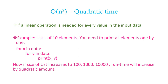Next is quadratic time — Big O of N squared. Let's consider an example: you have a list of N elements and you want to print all possible pairs of two elements. You write: for x in data, for y in data, print x, y. Suppose the elements are 1 through 10. For the first element, you pair it with all 10 elements; for the second element, again 10 times; and so on. So if a linear operation is needed for every value in the input data, this is going to take quadratic time — N times N is N squared.